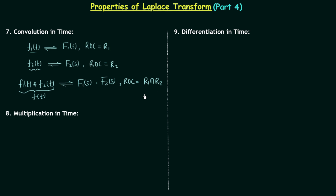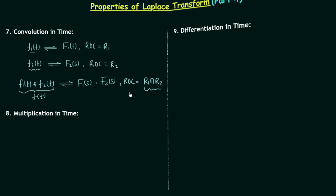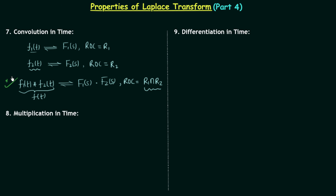Here we have one region r1 and another region r2, and we need to find the common region which is r1 intersection r2. The ROC must be greater than or equal to r1 intersection r2 — it is not necessarily exactly equal to r1 intersection r2; it can be larger. In simple words, the ROC must contain r1 intersection r2. This is the same result we obtained in the linearity property.